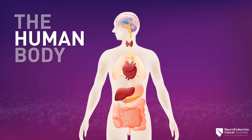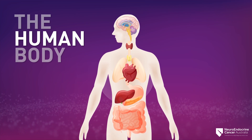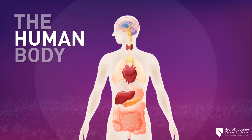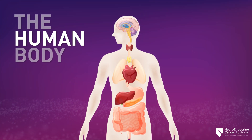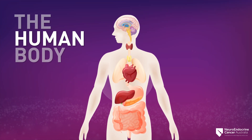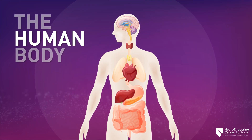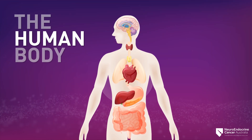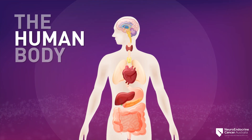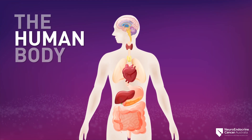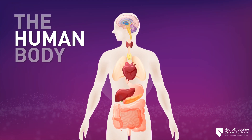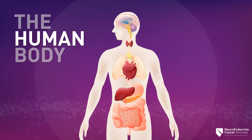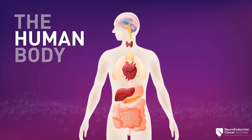Think of the neuroendocrine system as the body's regulator or supervisor. It controls hormones, which are chemical messengers that transmit information, regulate important metabolic processes, and thereby control the interaction between the body's organs.